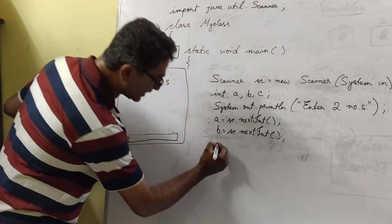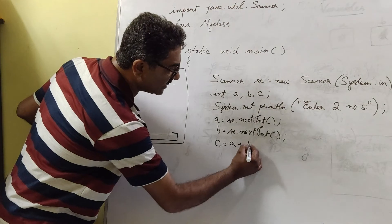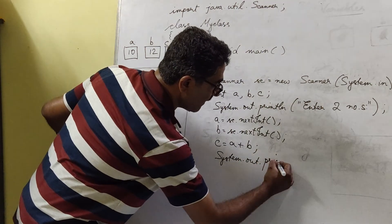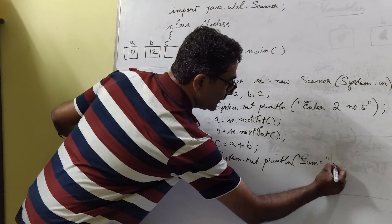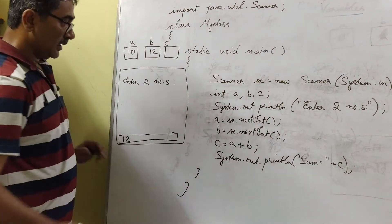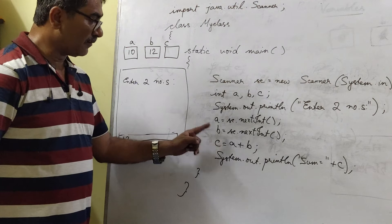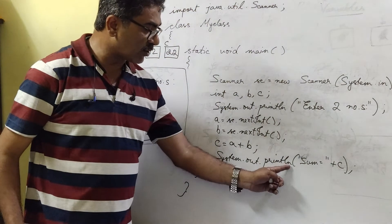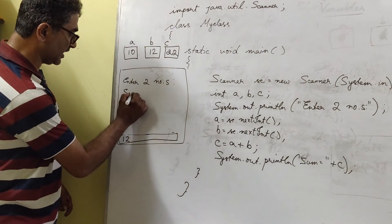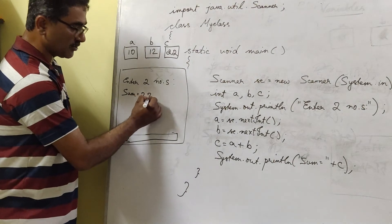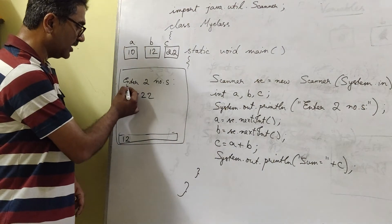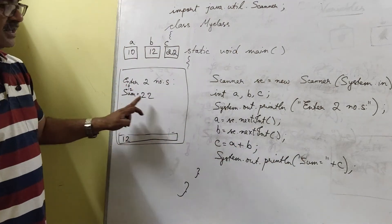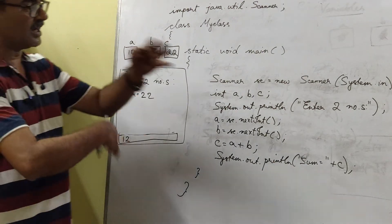The two values a and b — 10 and 12 — are then added and stored in c, so c becomes 22. The statement system.out.println with 'sum = ' joined with c displays: sum = 22. Some terminal windows even show the inputs entered by the user, but the key output is sum = 22.